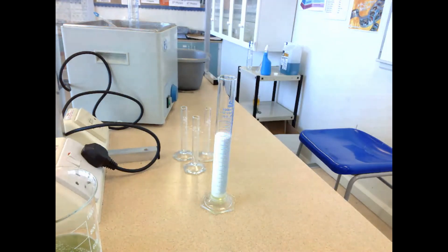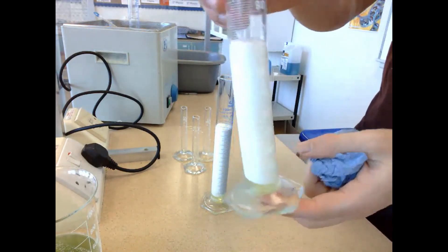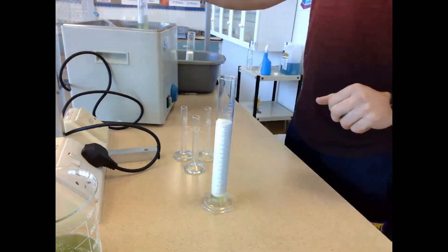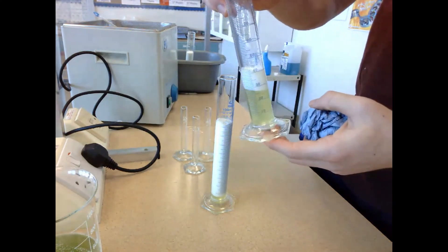The ice bath cylinder worked better than expected, which makes sense since catalase comes from a plant and plants can be exposed to low temperatures. The hot water bath cylinder barely worked because 60 degrees is well outside the optimum temperature range.